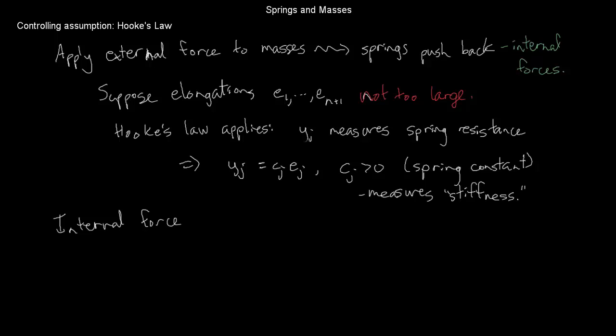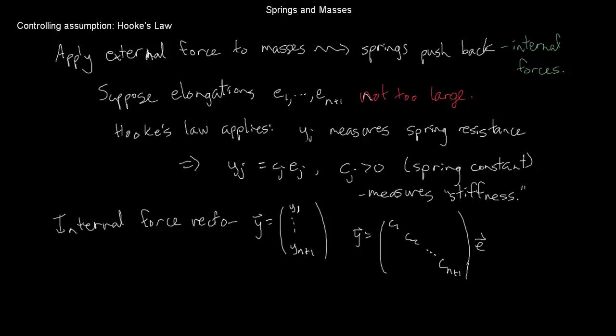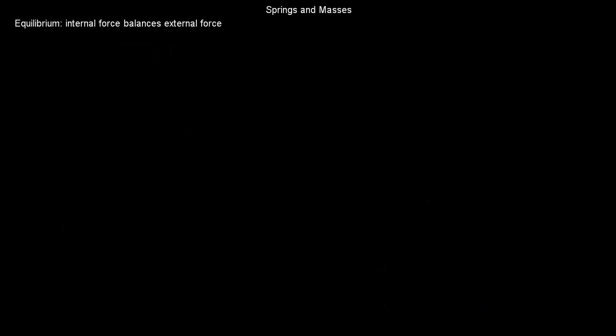If I let yj be the force that the jth spring is supplying in resistance to change, then yj equals cj times ej, where cj is the spring constant — a positive number that measures how stiff the spring is. In physics class you might have seen this as k sub j, but I'm using c in this video. It's a good idea to take all of these internal forces and stick them in a vector. That's y1 through y n+1. I can express Y in terms of E with a diagonal matrix C with entries c1, c2, through c_{n+1}: Y equals C times E. Notice that C is positive definite because it's diagonal with all positive entries.